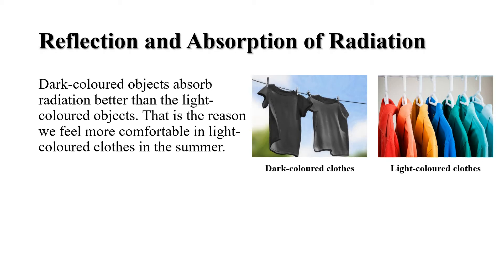When we carry an umbrella out in the sun, the umbrella reflects some part of the heat falling on it and protects us from heat. Dark colored objects absorb radiation better than light colored objects.